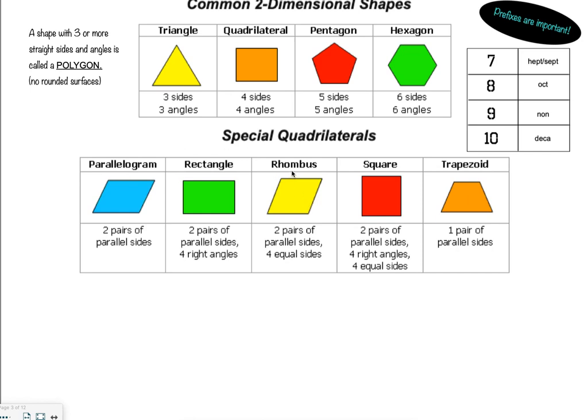Moving along to the rhombus, you have two pairs of parallel sides. And then the measurements of each side must be equal to one another. So in your rhombus, you have your top and your bottom that are parallel. You have your left and your right that are parallel. And all four have the same measurement. So if this was three inches, this would be three inches, this would be three inches, and this would be three inches.